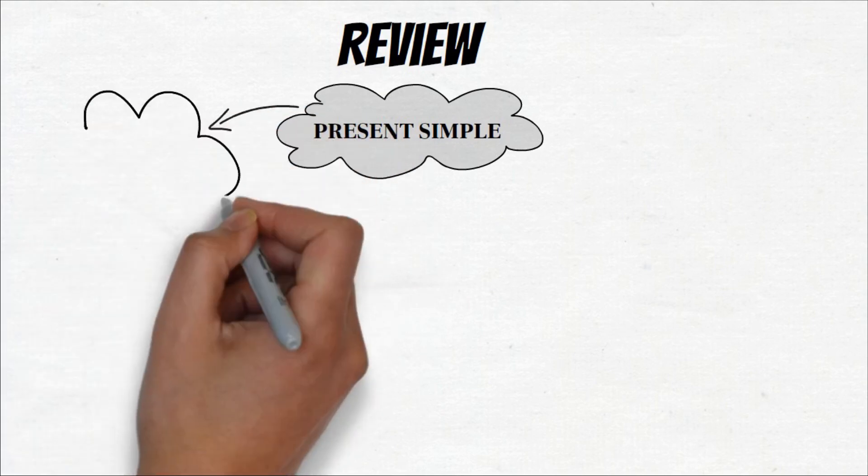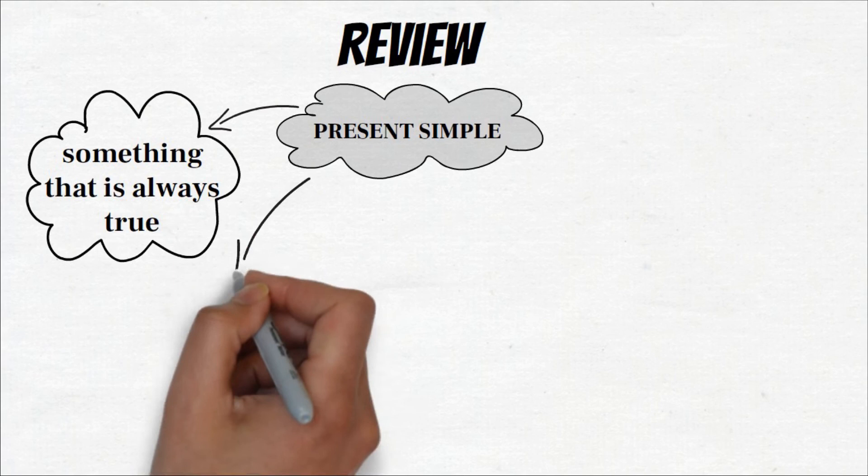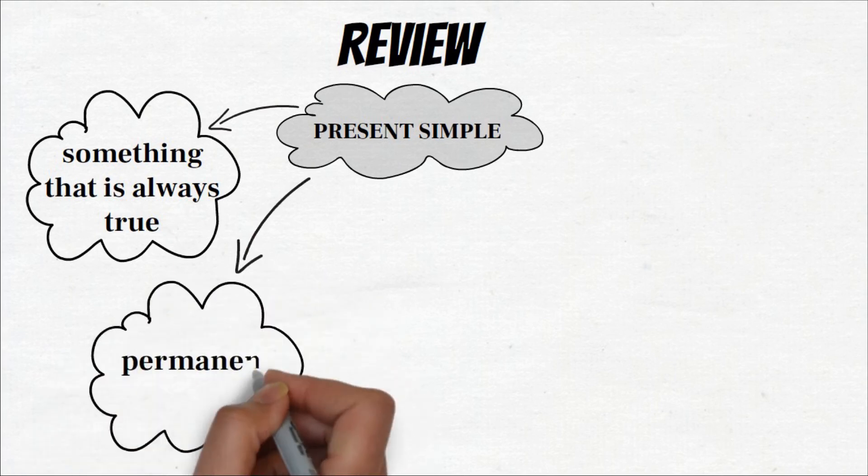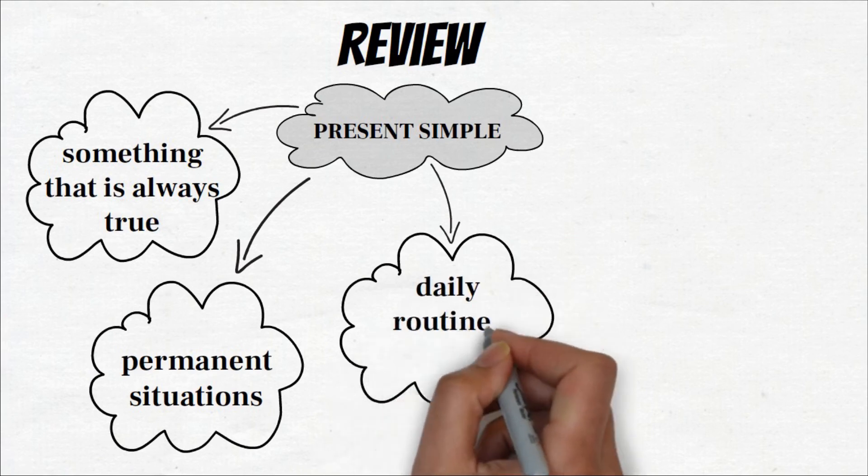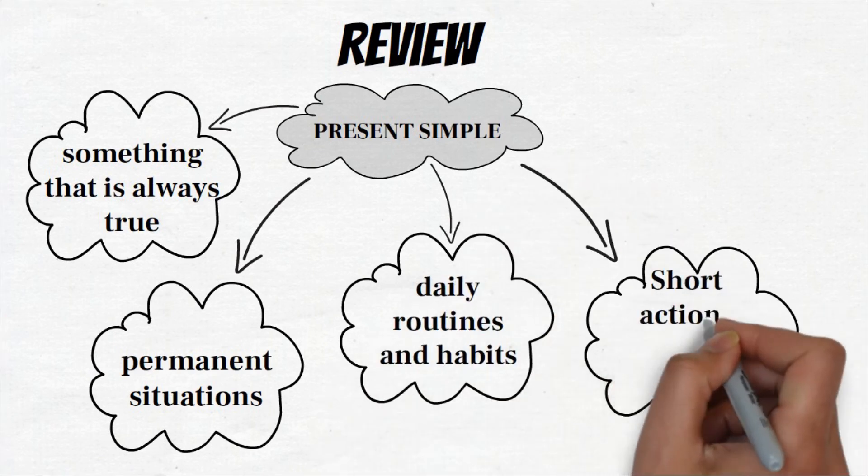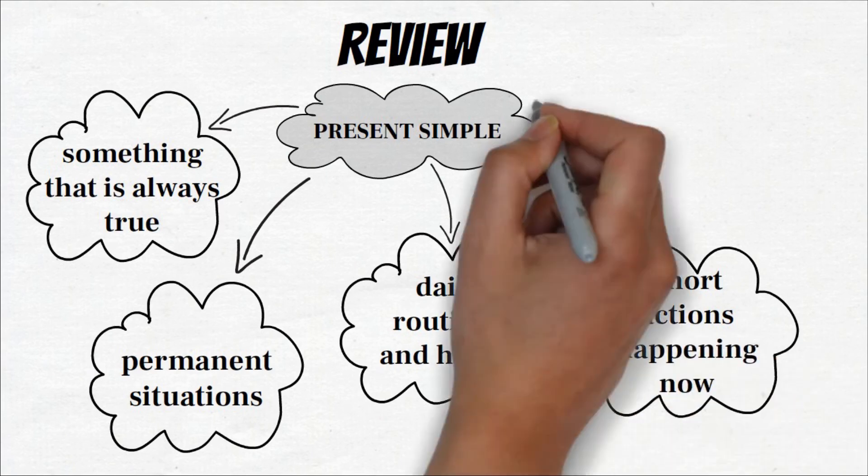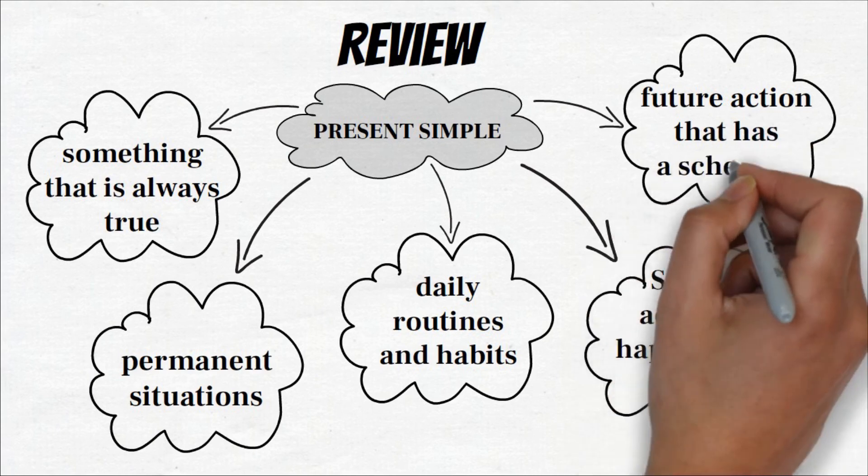So let's review. We use present simple to describe something that is always true, permanent situations, daily routines and habits, short actions happening now, and future actions that have a schedule.